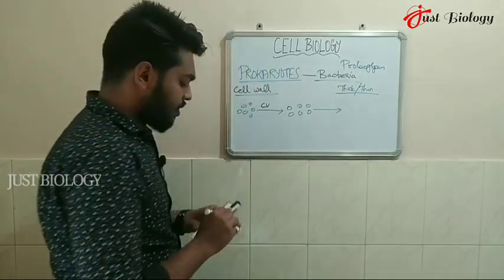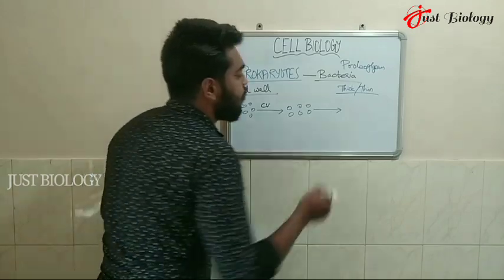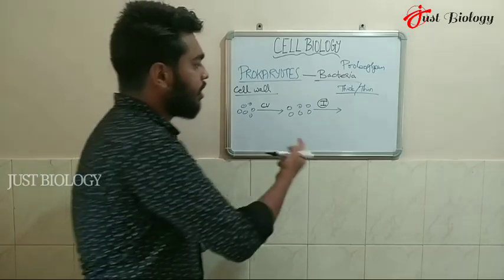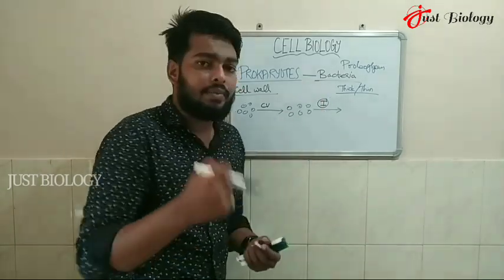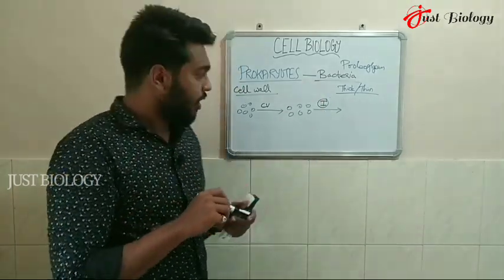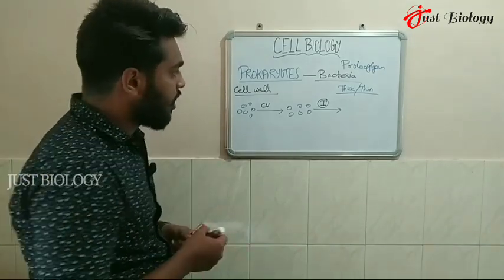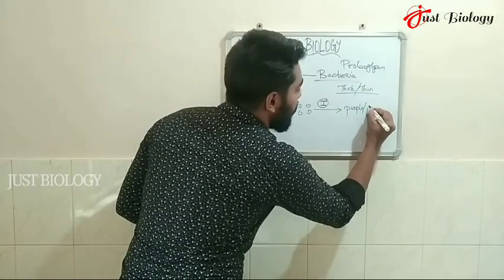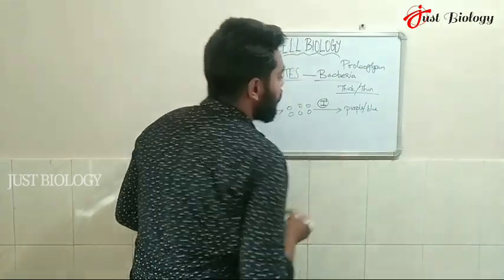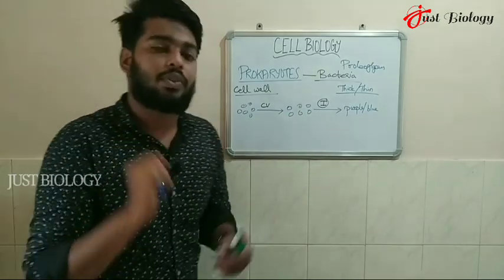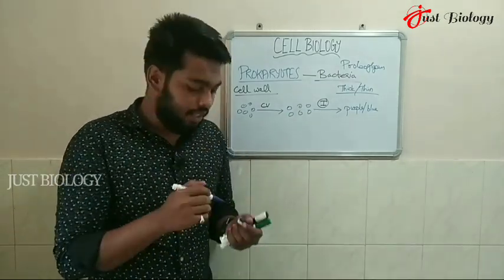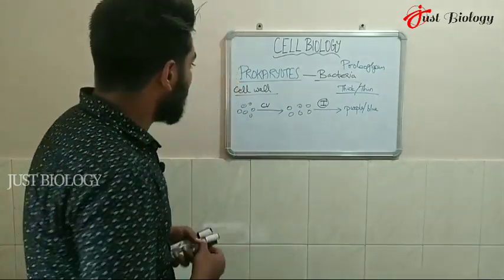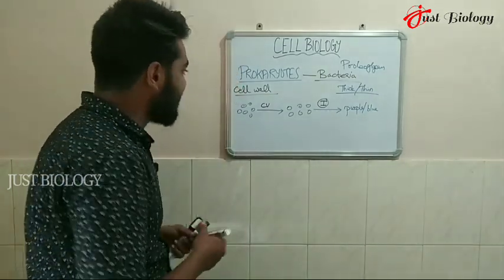The iodine entraps the crystal violet dye inside the cell wall. As a result, the thick cell wall retains the dye and the cell appears purple or blue in color. These cells are called Gram-positive cells because they retain the crystal violet stain due to their thick cell wall.